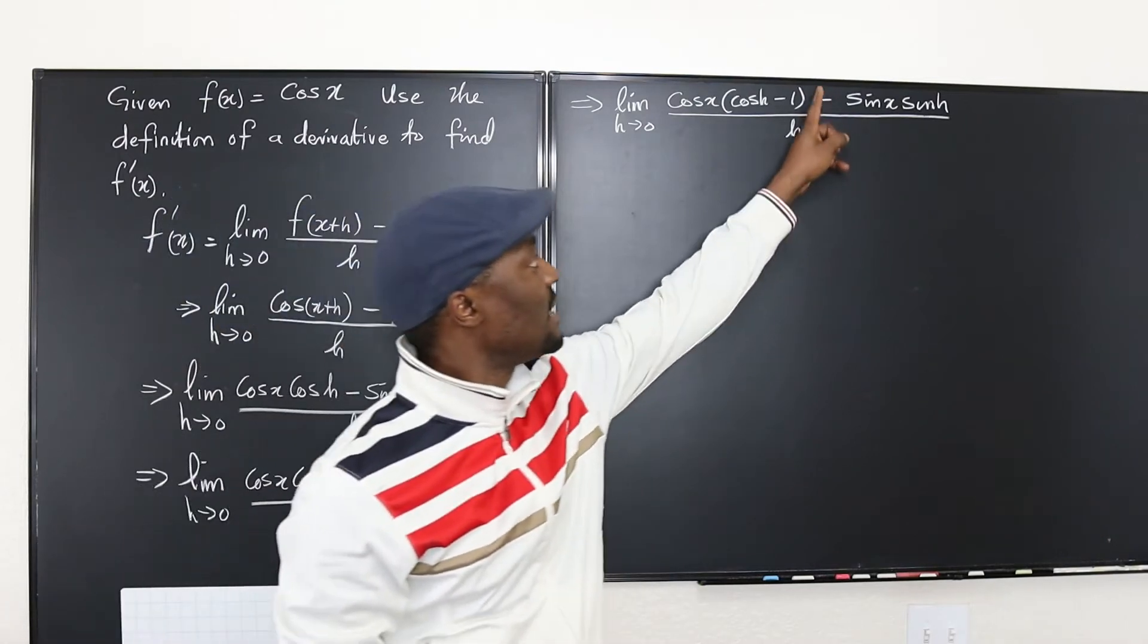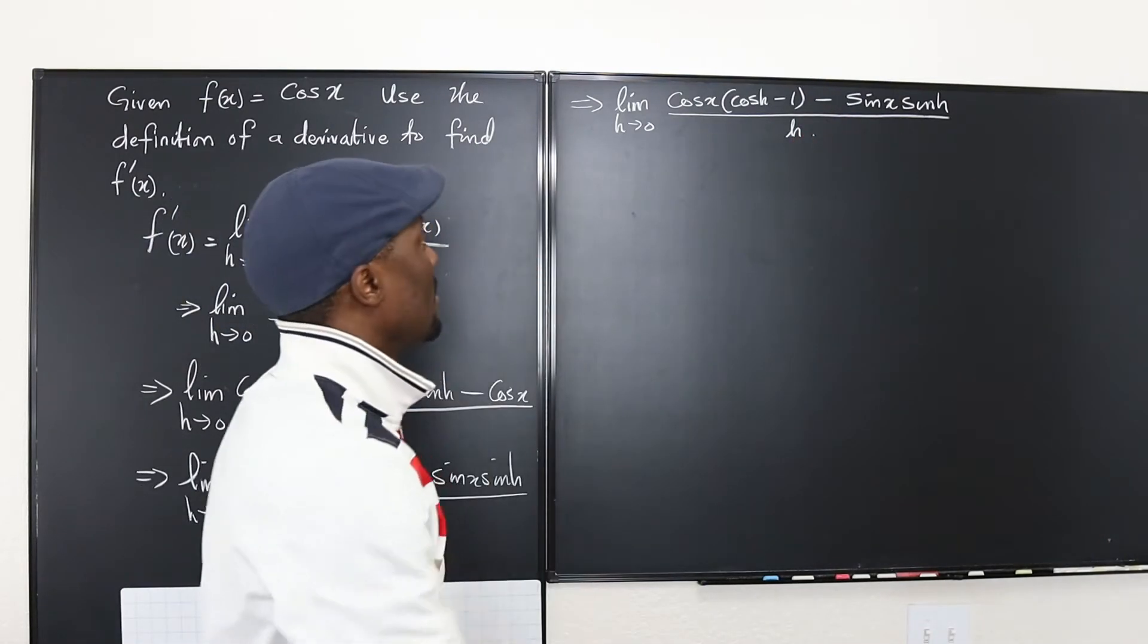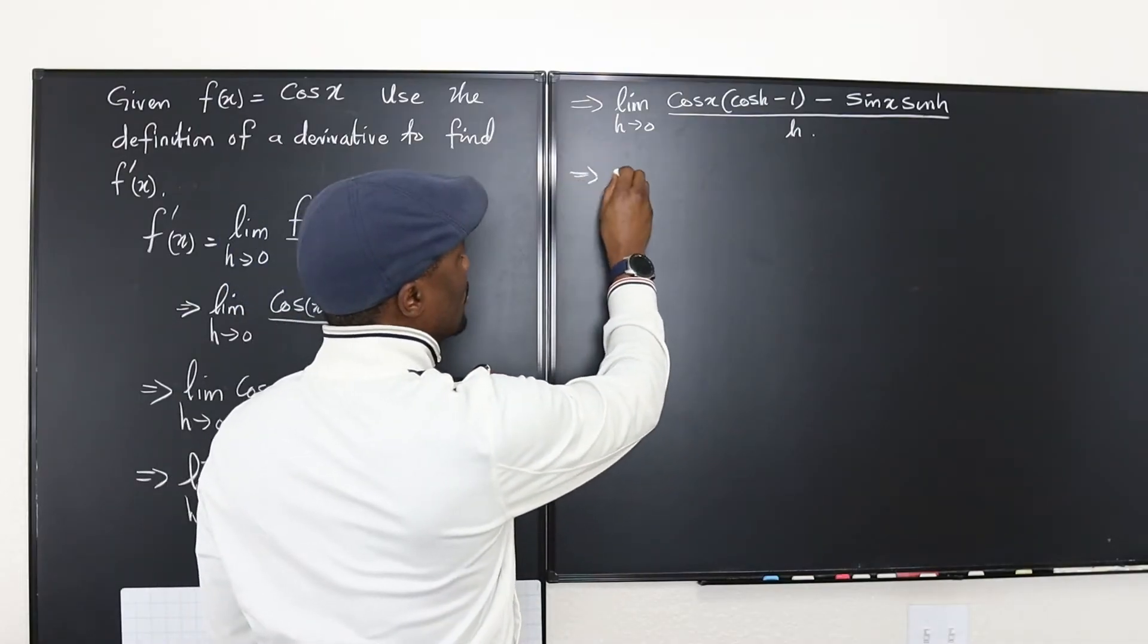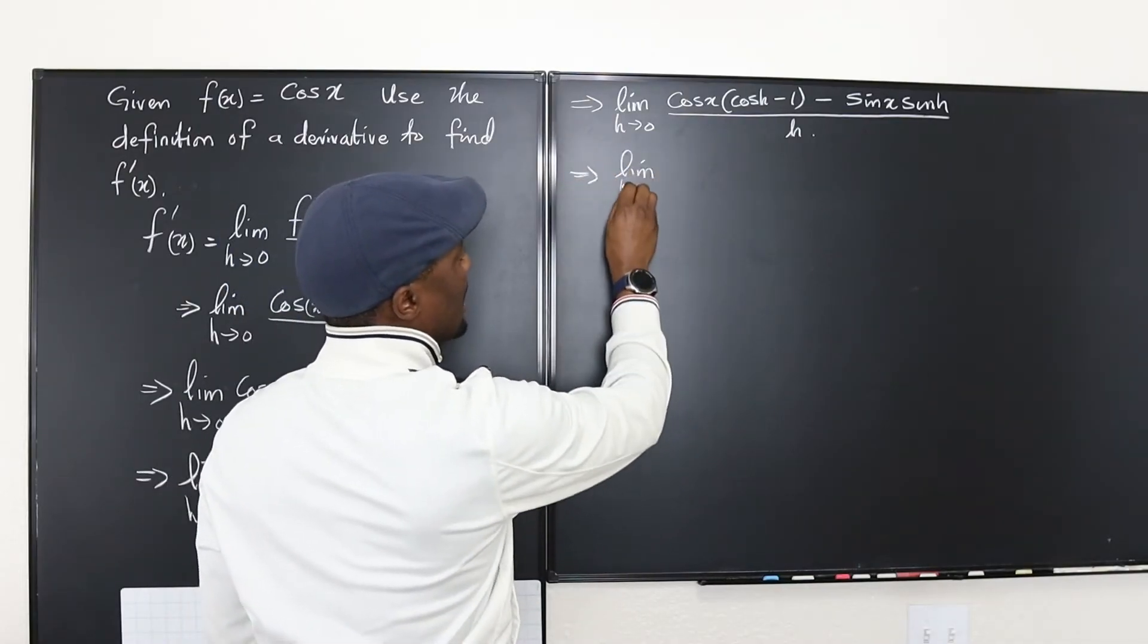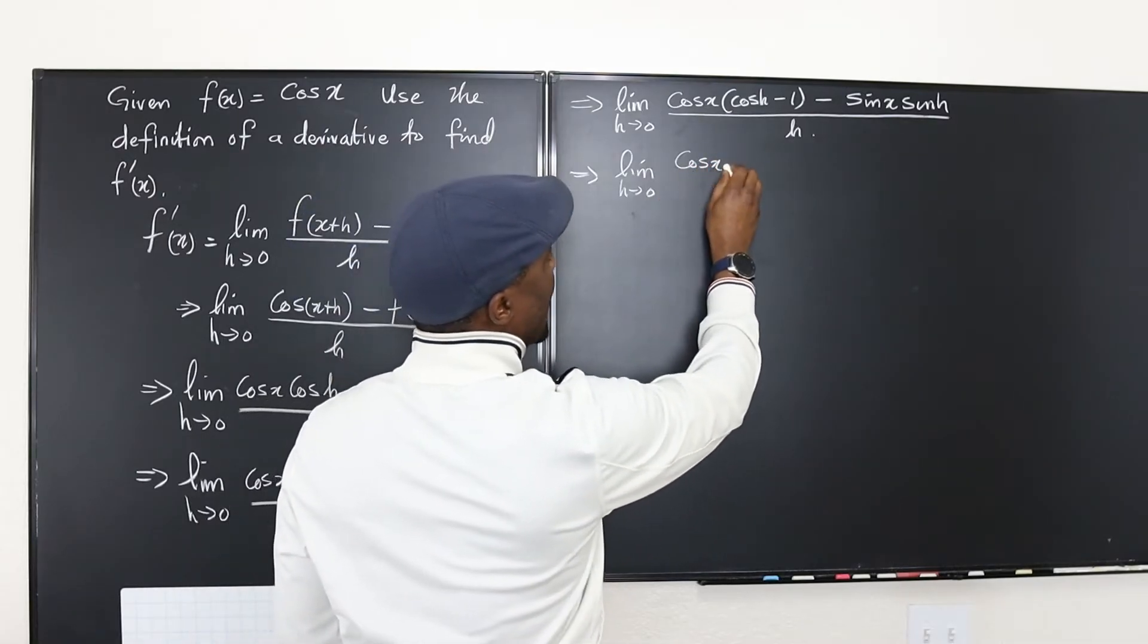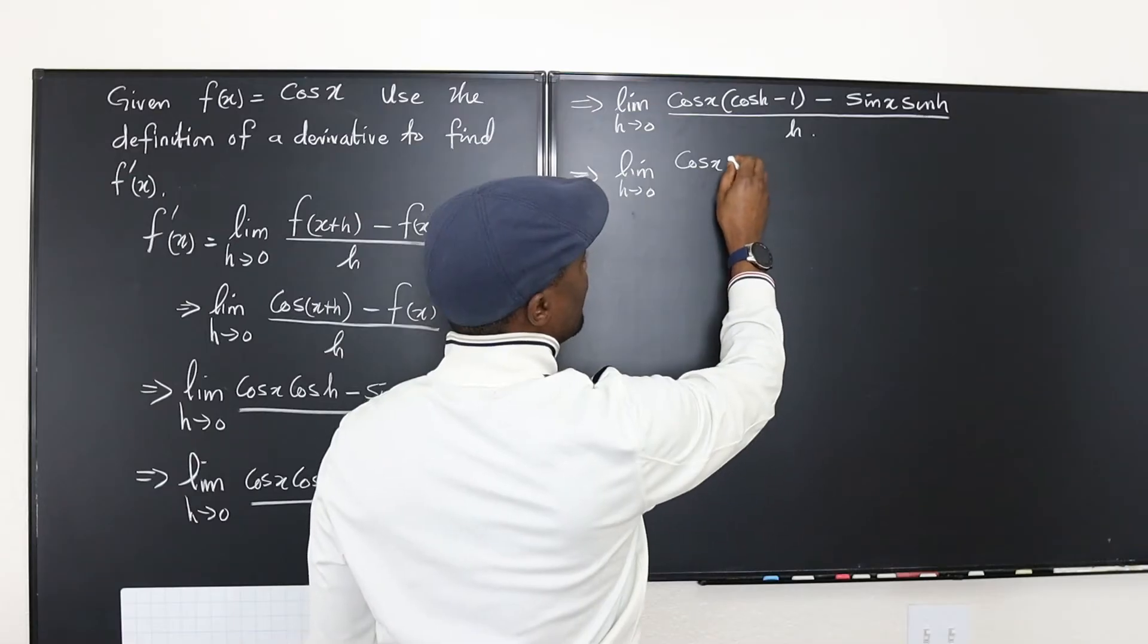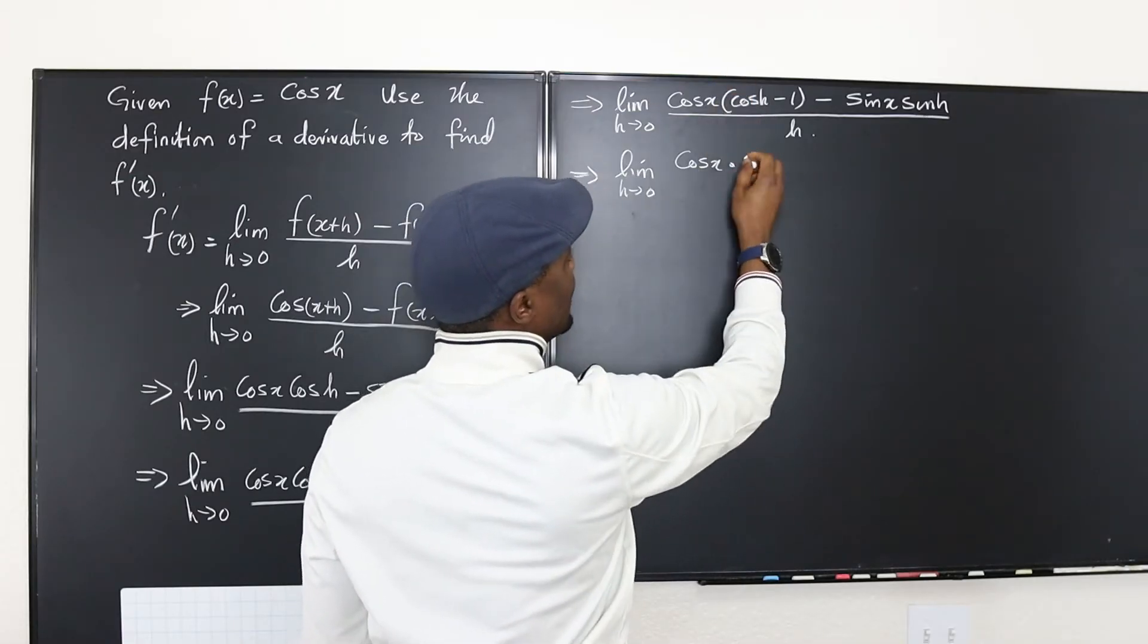So what I'm gonna do next is split this in two. Put h under this. Put h under that. Okay and we're gonna go to limit as h goes to zero of cosine x. Now when I split this it's gonna look like this. And I'm also gonna separate this.